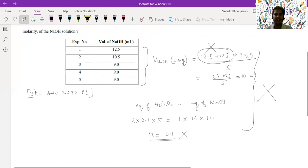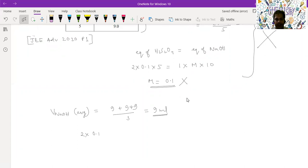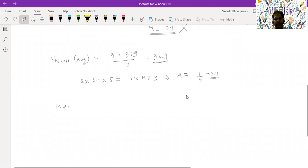Now we again solve it. The third, fourth, and fifth readings are exactly same. Volume of NaOH consumed at the end point will be taken as 9 mL. Now we'll apply: equivalents of H2C2O4 equals equivalents of NaOH. So 2 times 0.1 times 5 equals 1 times molarity times 9. If you solve it from here, we'll get molarity of NaOH is equal to 1 by 9, which is 0.111 recurring. So up to two decimals, the answer is 0.11 molar.